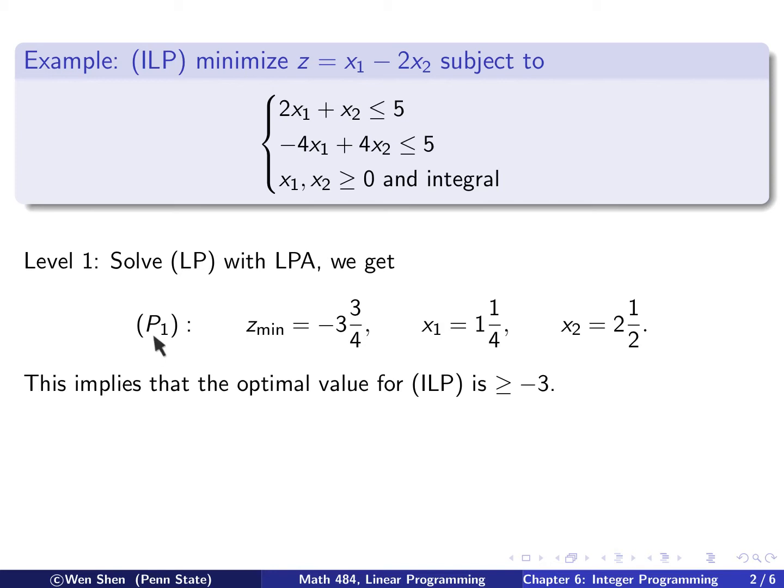So level one, let's solve the LP problem, meaning we neglect the integral constraint, we solve this linear programming in the LP assistant. And this is what we get. So we call this problem P1 at level one. So the minimum of z is negative three and three quarters, and this is x1, and this is x2, the optimal value.